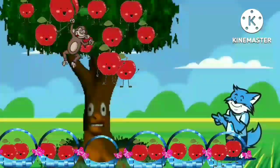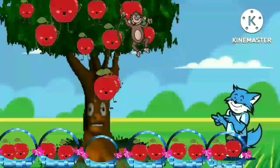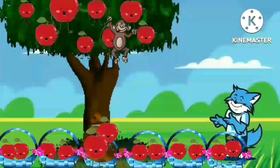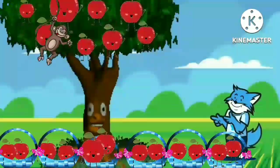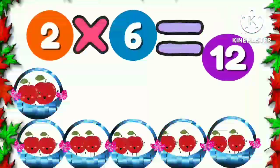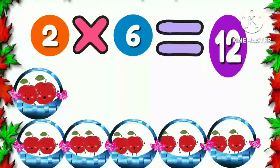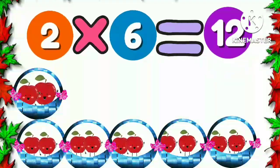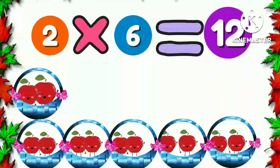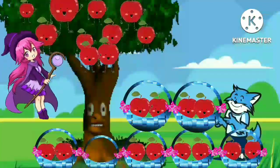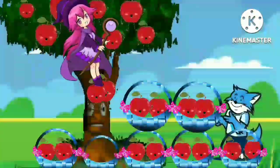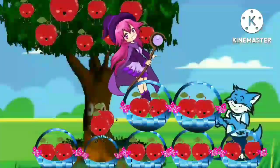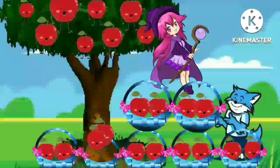And now a magician came and cut off two apples. The apples fell into the sixth basket. Now we have two apples in each six baskets. Two six times is twelve.